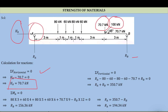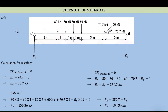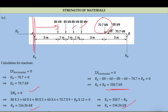Taking moment about A equal to zero and substituting all the forces with their respective distances - 3m, 4m, 5m, 6m, 9m from A, and RB at 12m - we get RB = 156.36 kN. Subtracting from 350.7 gives RA = 194.34 kN. These are the reactions.